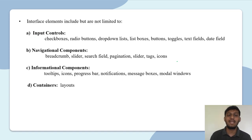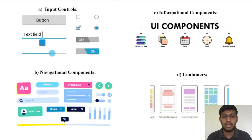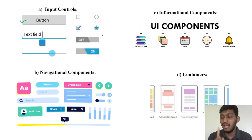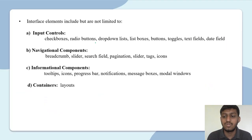The components on screen include Input Controls — where the user can give input. A Button is a clickable element. A Checkbox allows selecting multiple options. A Text Field is an input control for text entry. There is also a Toggle Button for on/off — these are all user input controls.